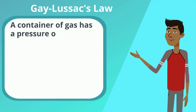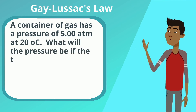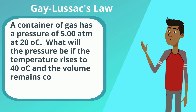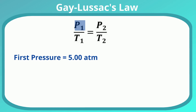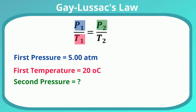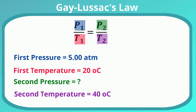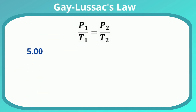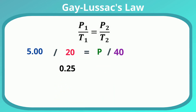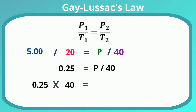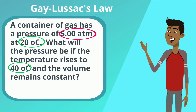Gay-Lussac's Law: a container of gas has a pressure of 5 at 20 degrees Celsius. What will the pressure be if the temperature rises to 40 degrees Celsius and the volume remains constant? The first pressure is 5, the first temperature is 20, the second pressure we don't know, and the second temperature is 40. So 5 divided by 20 equals P over 40, giving us 0.25 equals P over 40. Multiply both sides by 40, giving us 10 equals P. So the new pressure is going to be 10 atm.